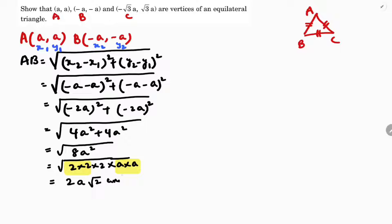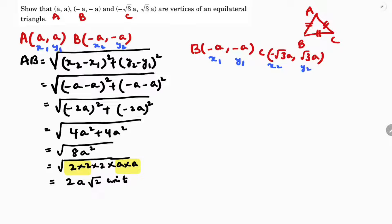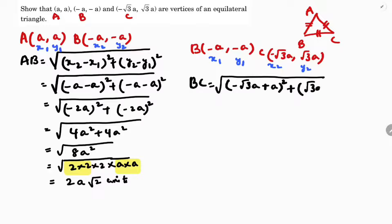Now in the same way we need to find the distance BC. Here B is (-a, -a) and C is (-√3a, √3a). Considering these as x₁, y₁ and x₂, y₂, the BC distance formula is: BC = √[(x₂ - x₁)² + (y₂ - y₁)²]. Substituting: (-√3a - (-a))² + (√3a - (-a))².